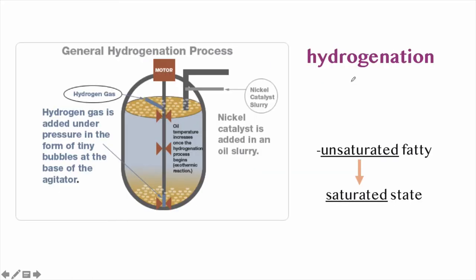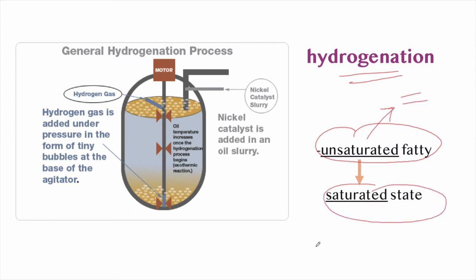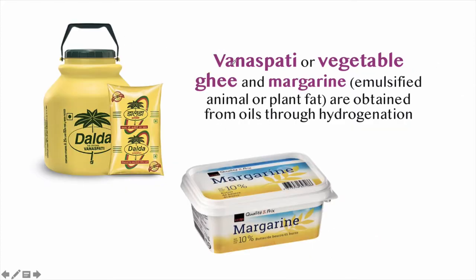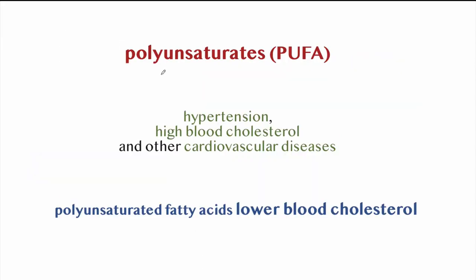Edible oils can be converted into hard fats through hydrogenation: unsaturated fatty acids having double bonds are changed to a saturated state with all single-bonded carbon atoms by adding hydrogen gas under pressure. Common examples include vanaspati or vegetable ghee (e.g., Dalda) and margarine — obtained from oils through hydrogenation and generally not good for health. Oils with polyunsaturated fatty acids (more than one double bond) are called polyunsaturates or PUFAs.